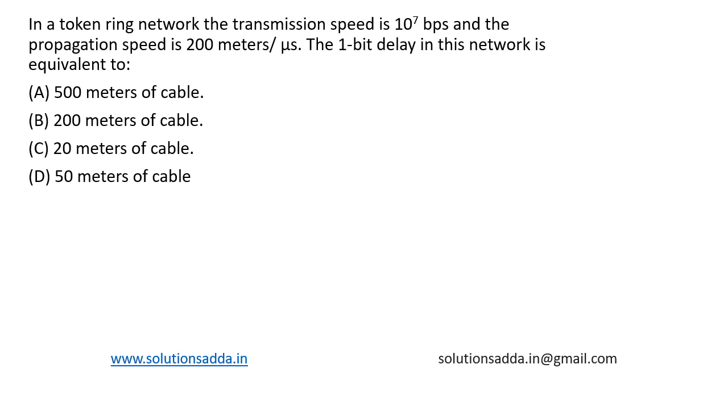This is a question from computer networks. In a token ring network, the transmission speed is 10 to the power of 7 bits per second and the propagation speed is 200 meters per microsecond. The one bit delay in this network is equivalent to, and four options are given.